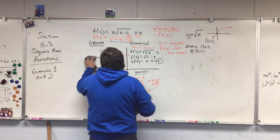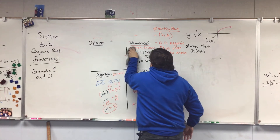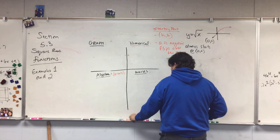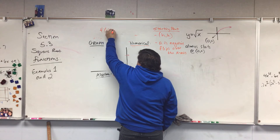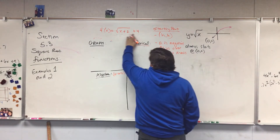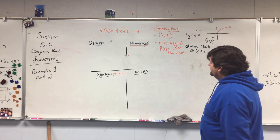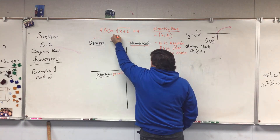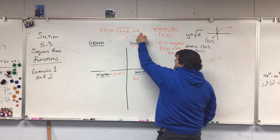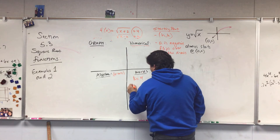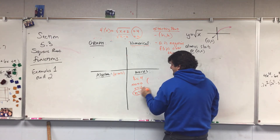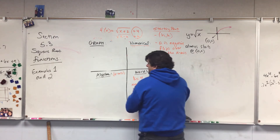Let me erase this and show you one more that can mess with you. Our new equation is f of x equals the square root of x plus two, plus four. We have the form a times the square root of x minus h, plus k. So k equals four. I take x plus two, set it equal to zero, and get x equals negative two — so h equals negative two. My starting point is at negative two and four.